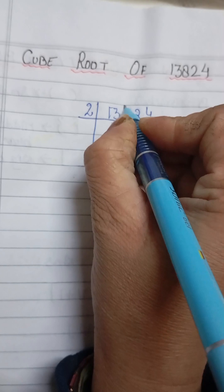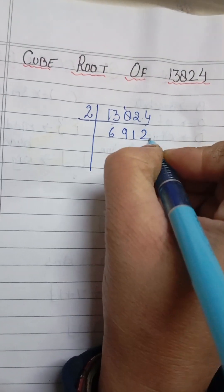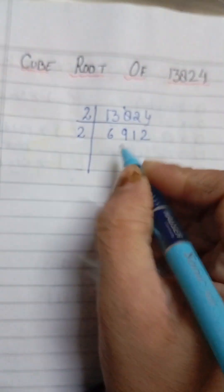So, 2 times 6 is 12. Remainder is 1. 2 times 9 is 18. 2 times 1 is 2. 2 times 2 is 4. It is also divisible by 2 again.